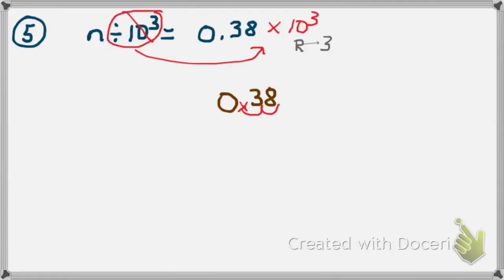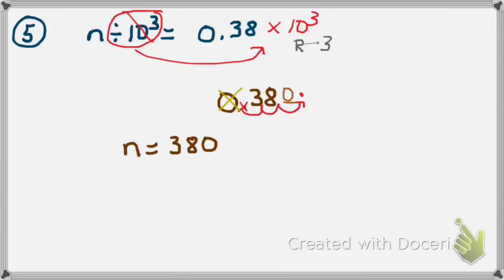I take my given number 0.38, cross out the decimal, and move it one, two — I need a place value zero — so I can move it three places to the right. Are there any unnecessary zeros? Yes — this is a whole number and the leading zero is unnecessary. So n equals 380.